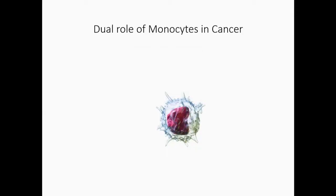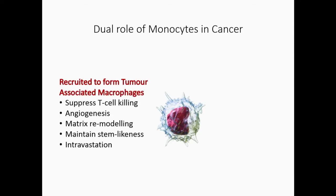Monocytes are really interesting because they have a kind of dual role. And they're actually the cells that are recruited to form tumor-associated macrophages. Things like PD-L1 are used to suppress T cell killing. But these cells are also important in terms of matrix remodeling. They support the angiogenesis that occurs. And ultimately, some really eloquent imaging has shown that they actually punch holes in the endothelial wall and allow for intravasation and ultimately spread of the tumor.